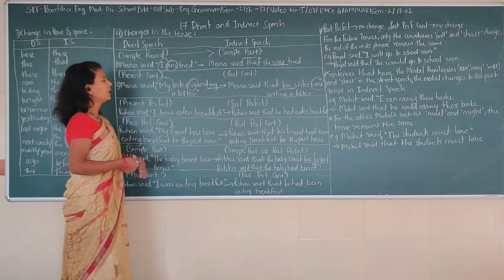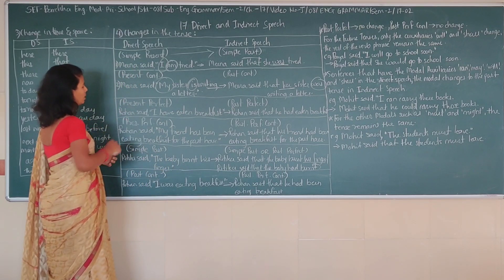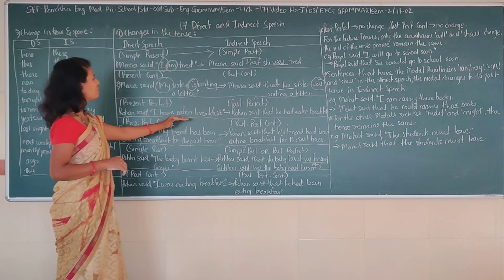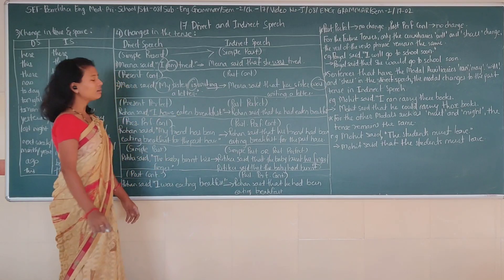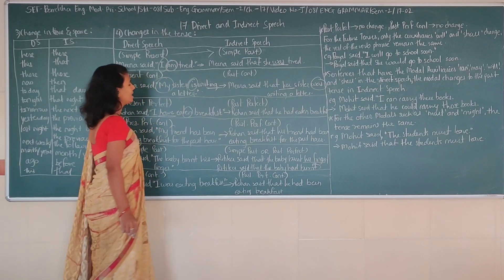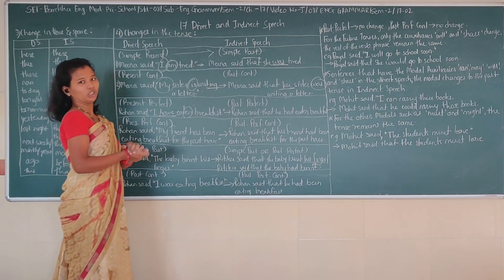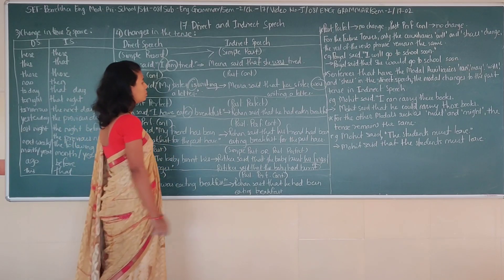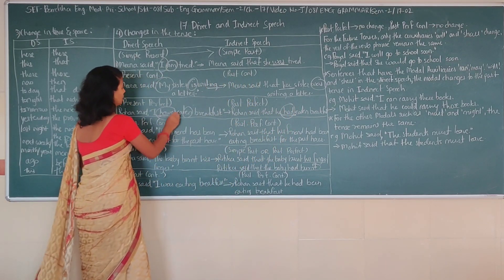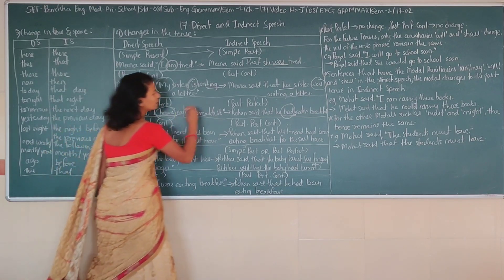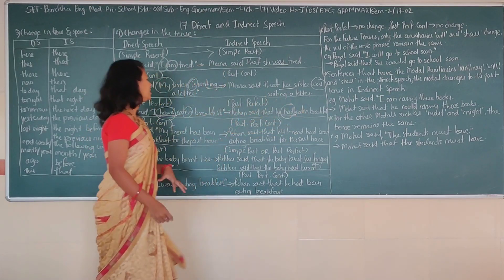Now, present perfect should be changed into past perfect. In present perfect you use 'have' plus a past participle. For example: 'Rohan said I have eaten breakfast.' In indirect speech: 'have' will become 'had' — so 'Rohan said that he had eaten breakfast.' Present perfect changes to past perfect.